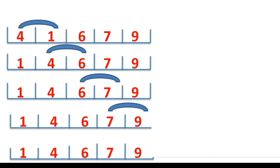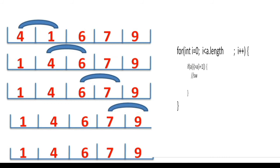To understand this more clearly, let's write down our logic. We need a for loop to iterate the array and compare adjacent elements. The first inner loop goes from i equal to 0 to i less than a.length, and i++. Inside this, we check: if a[i] is greater than a[i+1], the two adjacent elements are being checked, and if it is greater we write the swapping logic. For swapping, we use a temp variable: store a[i] in temp, then shift a[i+1] into a[i], and put temp into a[i+1].